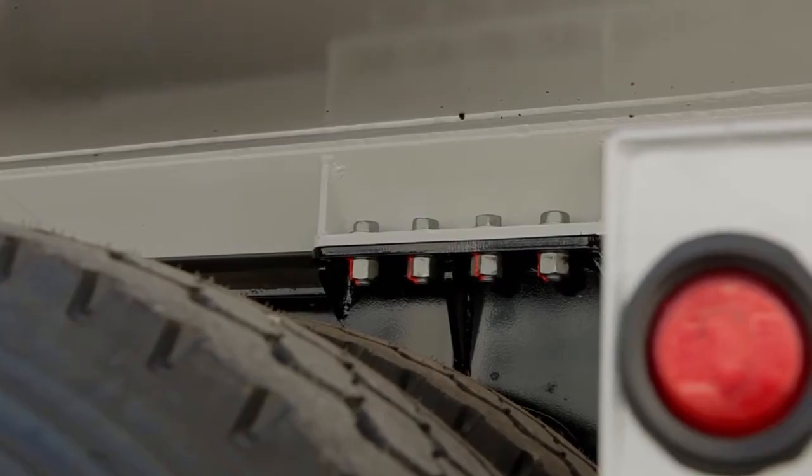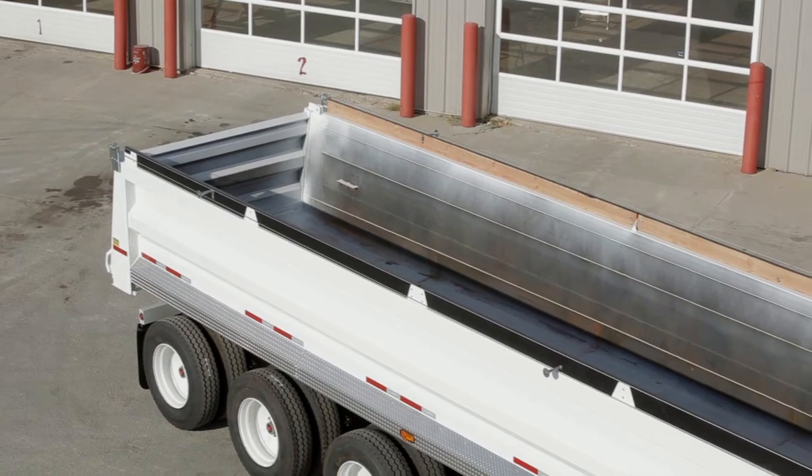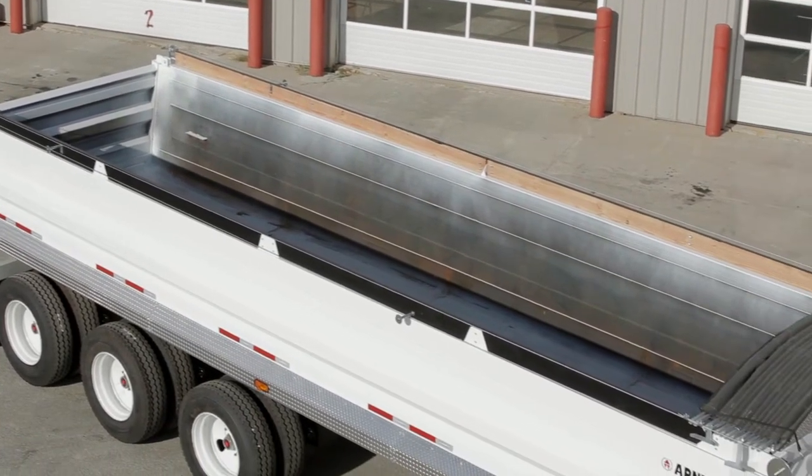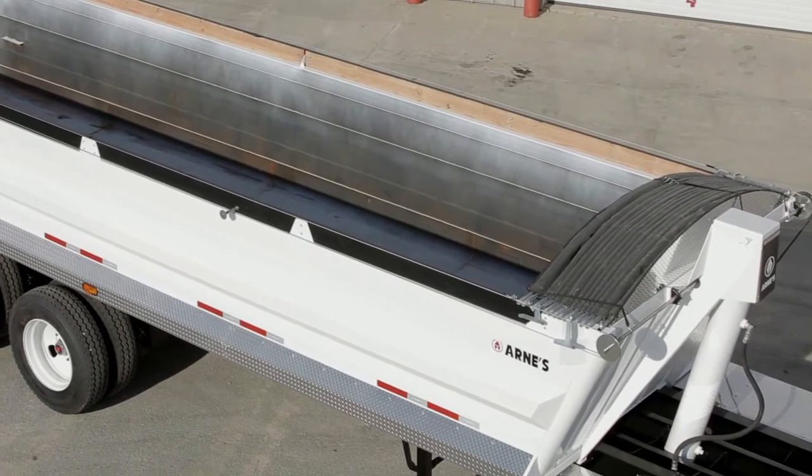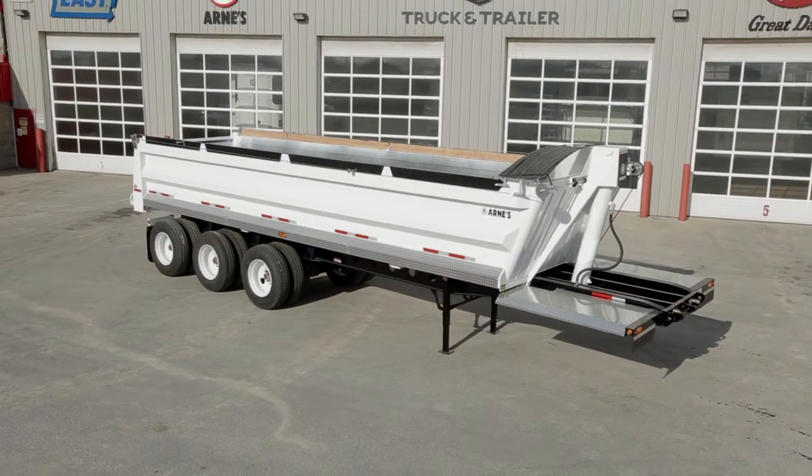Notable features of an Arnie's End Dump include continuous one-piece upper and lower wall sheets that eliminate any vertical seams in the sidewalls. This helps prevent load sticking inside the box.